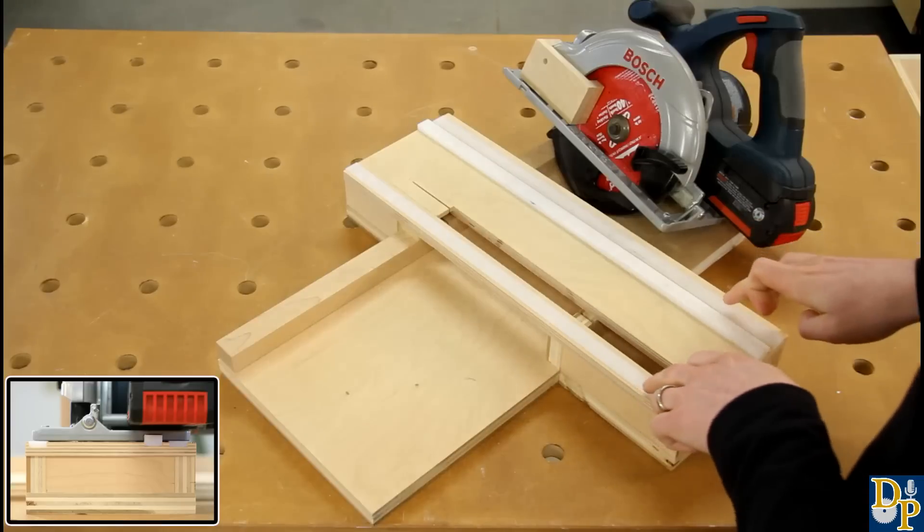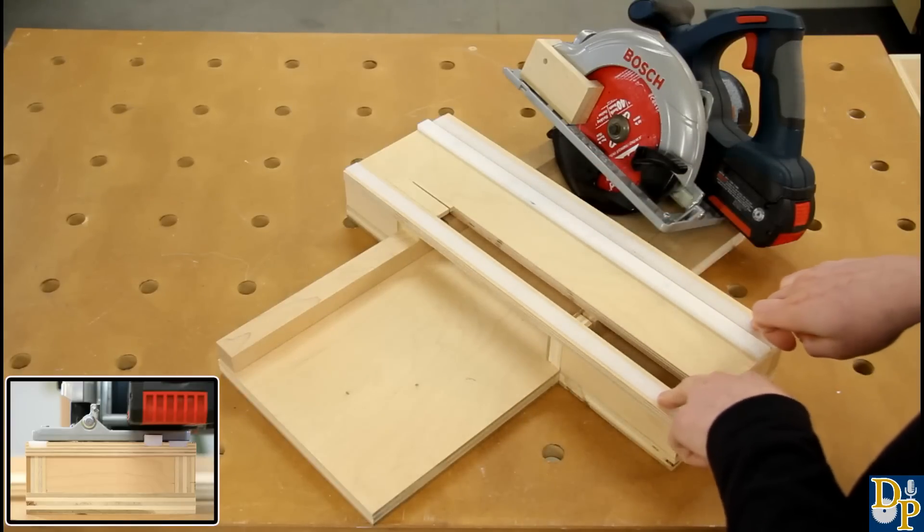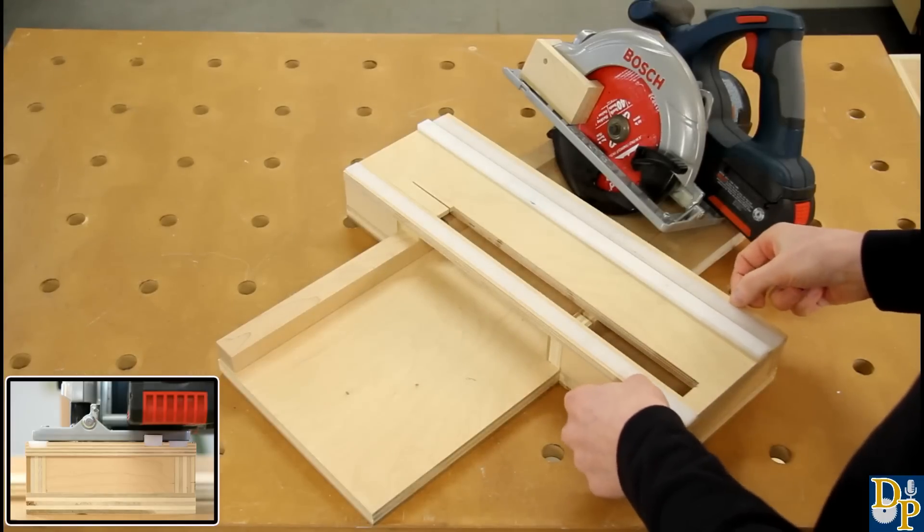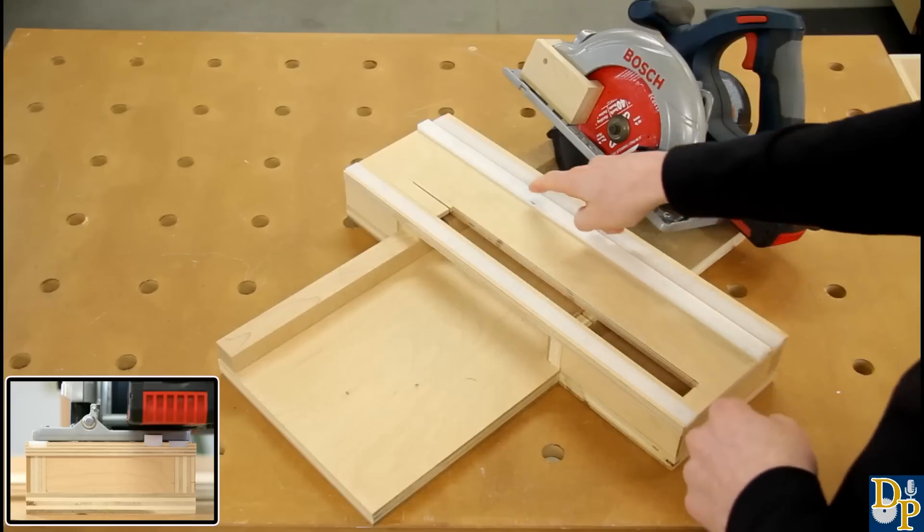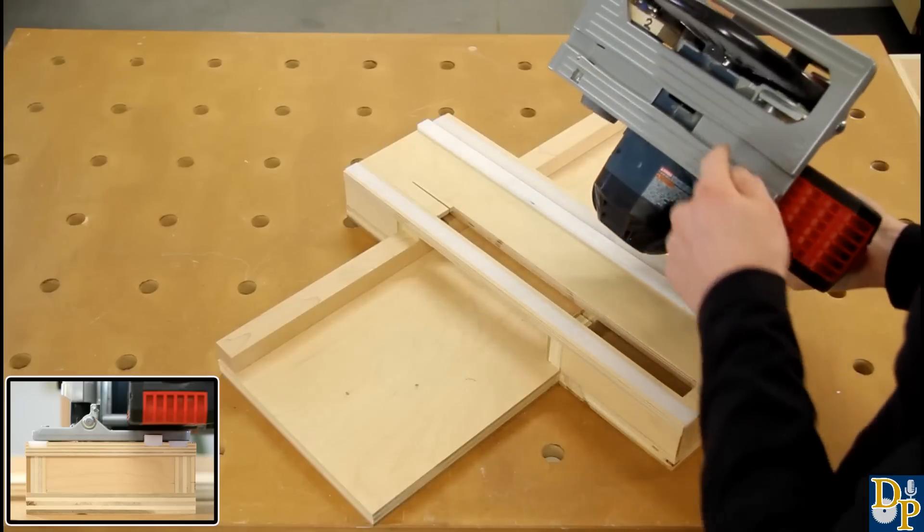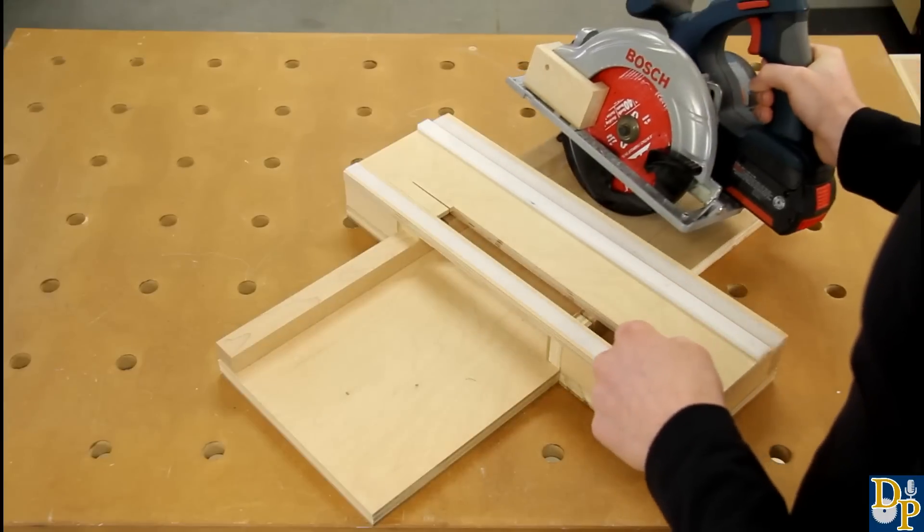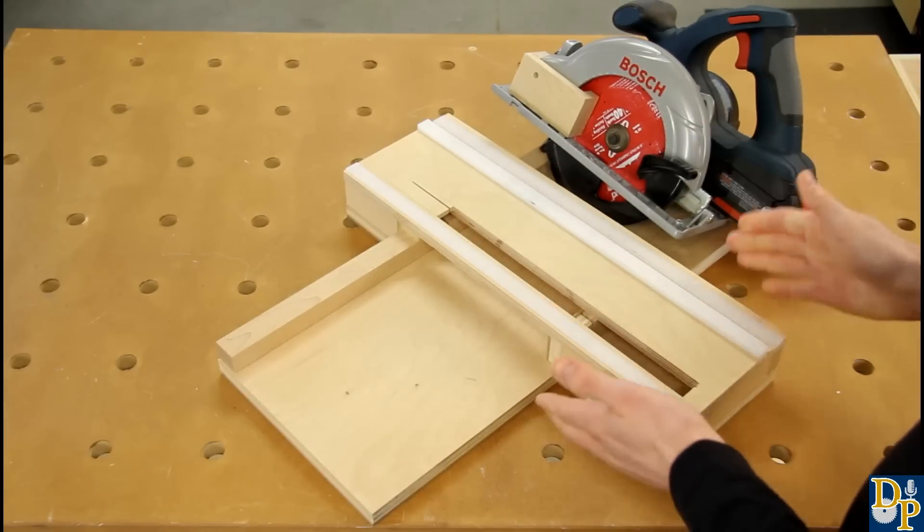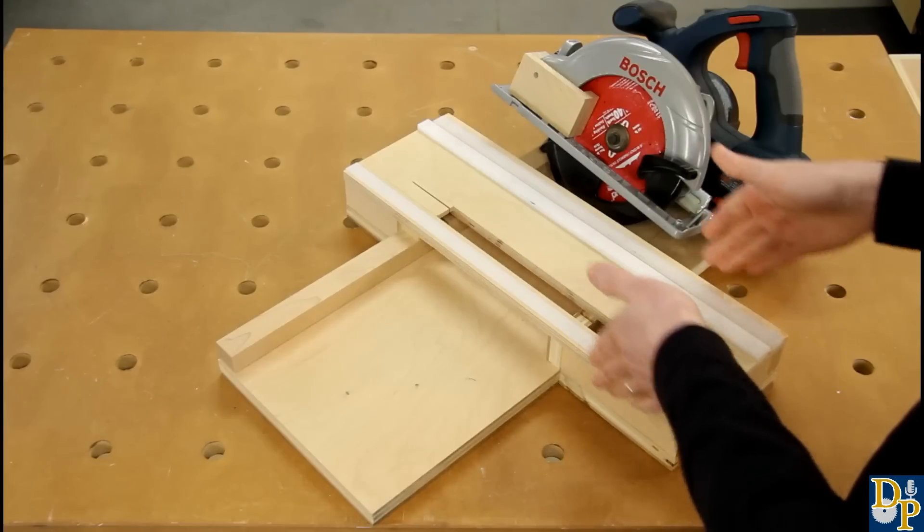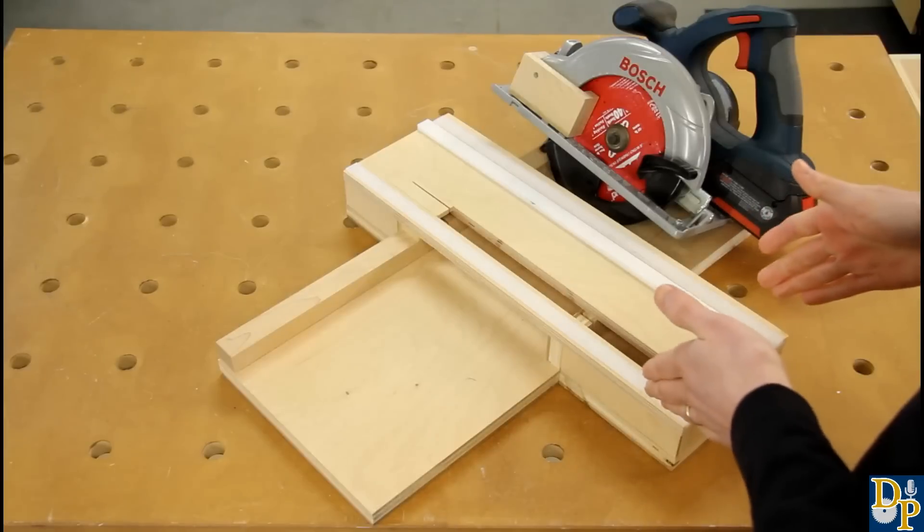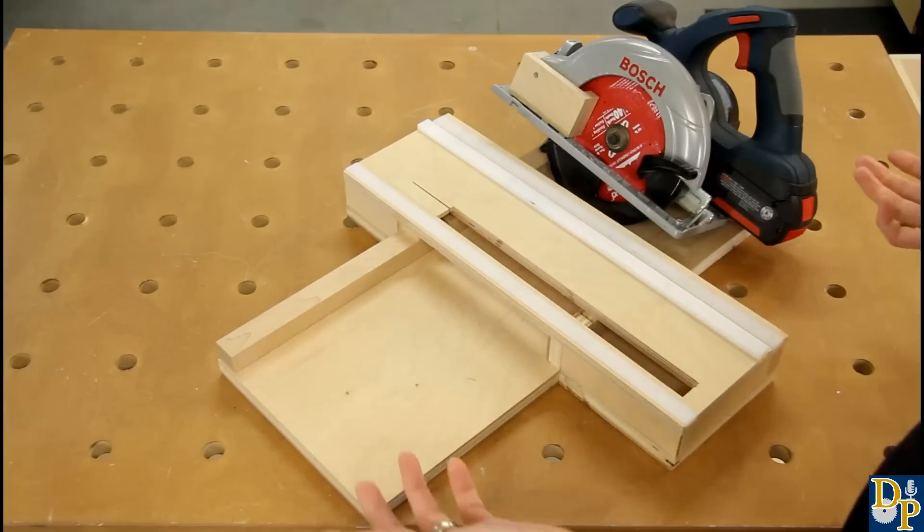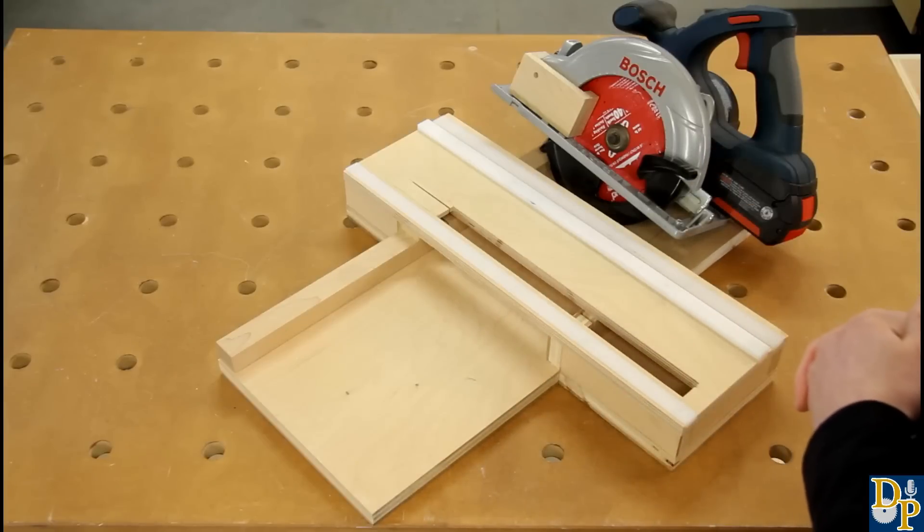Now I dadoed in two strips of UHMW or ultra high molecular weight plastic for the saw to ride on. That sits just above the plywood surface. And then I also dadoed in a thicker strip of the same material for the groove in the bottom of the saw to register on. Now if your saw doesn't have a groove in the bottom you can do the same thing. It would just mean using two thicker strips and putting them out at the sides of where the base of the saw would be so that it captures the saw between the two rails rather than the single rail. So whichever kind of saw you have you can still make the jig work.